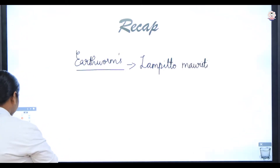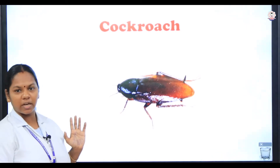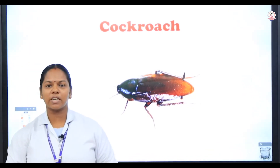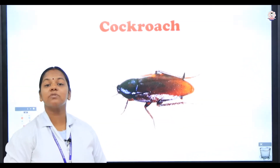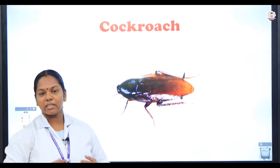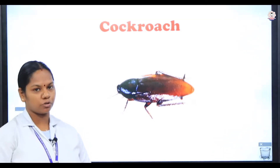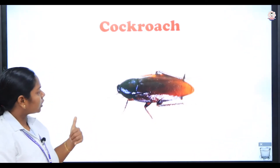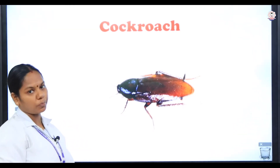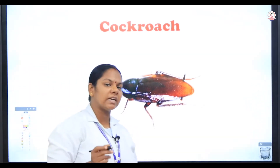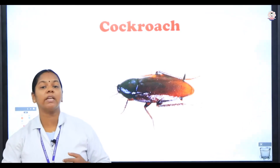In this session we are going to see about the cockroach. Can you say something about a cockroach? Everyone is allergic towards a cockroach, and sometimes a person with asthma — their symptoms may be aggravated due to the smell produced by the cockroach. This cockroach is an insect; it belongs to class Insecta and phylum Arthropoda, and it is cosmopolitan. What do you mean by cosmopolitan? It is found in all habitats.